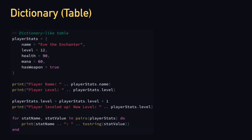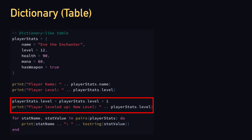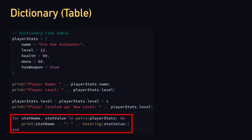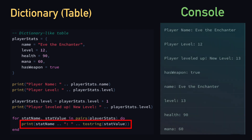Next we'll talk about dictionaries. Dictionaries allow us to store key-value pairs inside of tables. In this example, we have player_stats containing name ('Eve the Elf'), level (12), health, mana, and weapon — each added with a comma and an equals sign. We print out the player's name and level, increase the level by one, then print the new level. There's also a for loop using `pairs` instead of `ipairs`. `pairs` gives us a key-value pair of the table, so we get the stat name and then the stat value for each entry.